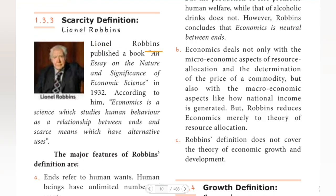Lionel Robbins published his book — an essay on the nature and significance of economic science — in 1932. According to him, economics is a science which studies human behavior as a relationship between ends and scarce means which have alternative uses.